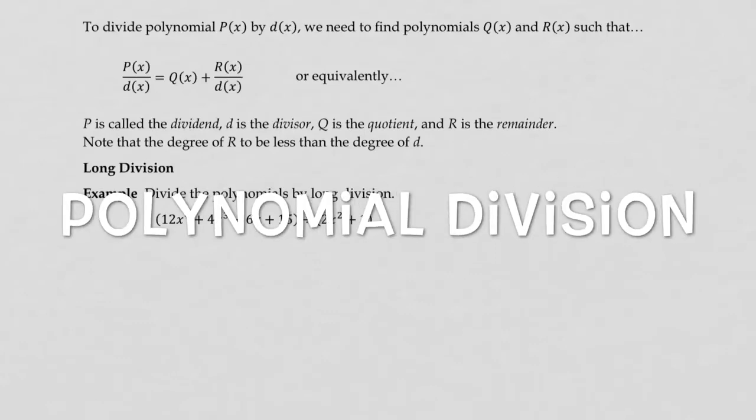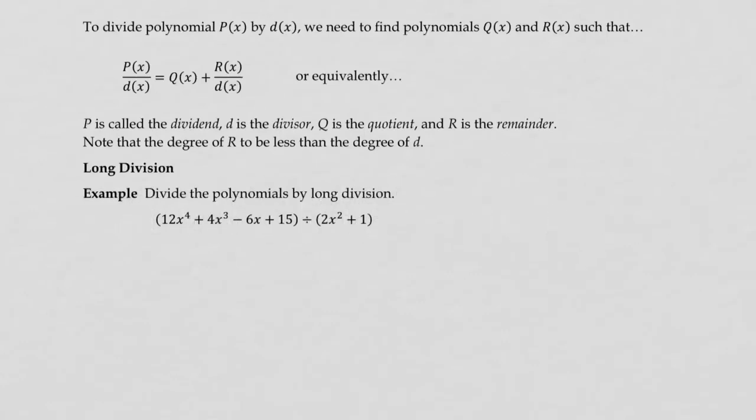Let's take a look at the process of polynomial division. To divide polynomial P(x) by D(x), we want to find a polynomial Q(x) and a polynomial R(x) such that the division equals Q(x) plus R(x) over D(x).